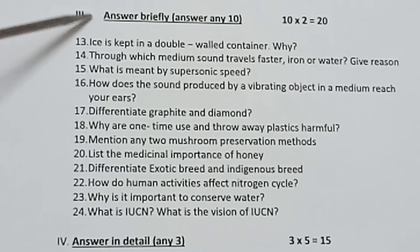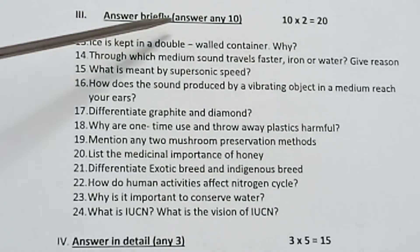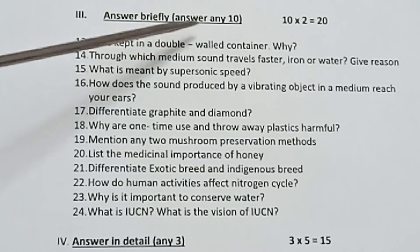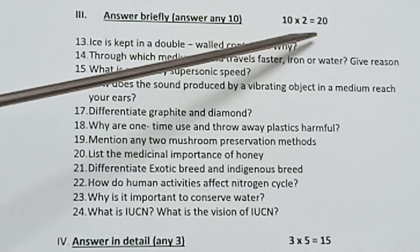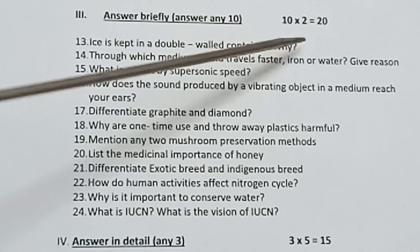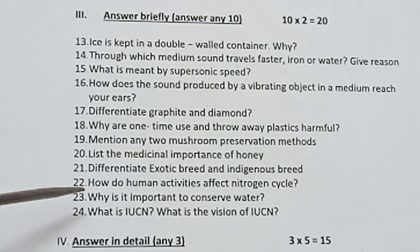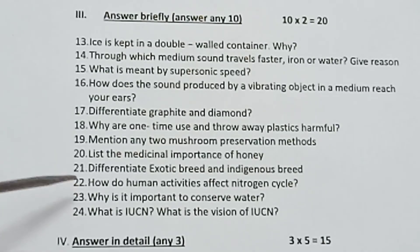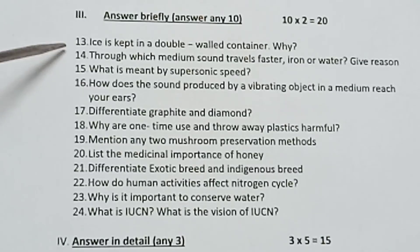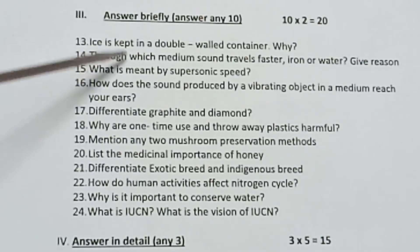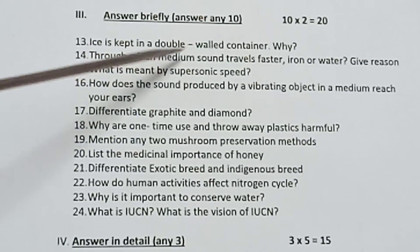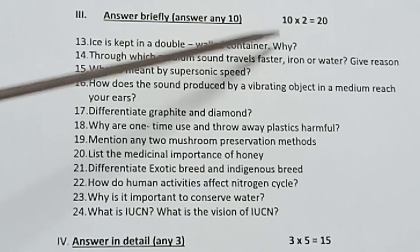Part 3: Answer briefly. Answer any 10 out of 12 questions — 10 into 2 is equal to 20 marks. There are 12 questions; choose any 10. Question 13: Ice is kept in a double-walled container — why?